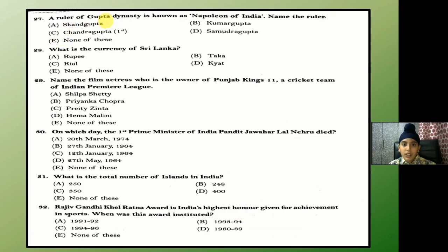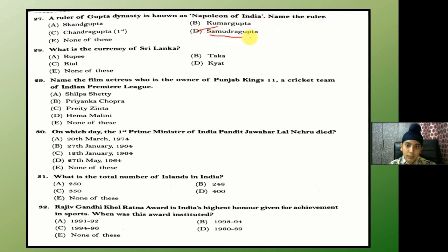A ruler of the Gupta dynasty is known as the Napoleon of India. Name the ruler. The answer is D — Samudragupta.